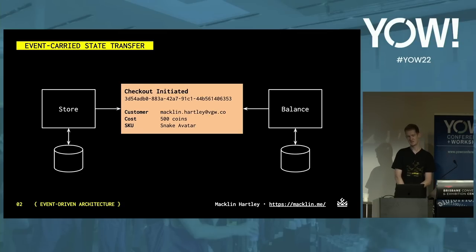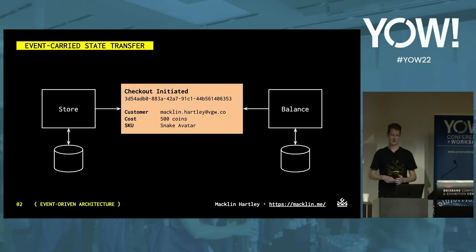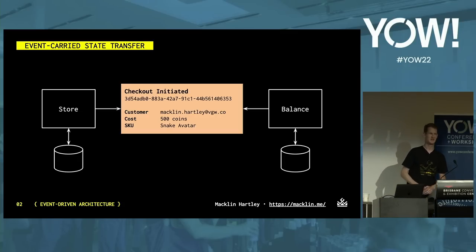What if we added some additional state to the event? This would be what's known as event-carried state transfer. This avoids the need for the balance service to query more information from the store because it's all on the event. But as soon as we have this information, it's potentially stale. If we read it later from our database, the information we have may not match the source anymore — the store might have new events or new information about this checkout that the balance service has not yet received. This is known as eventual consistency.